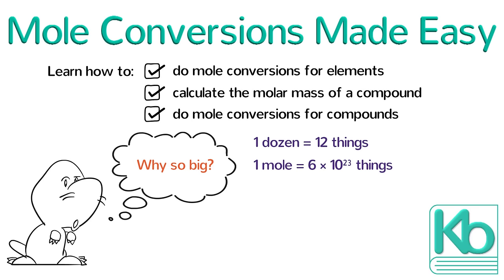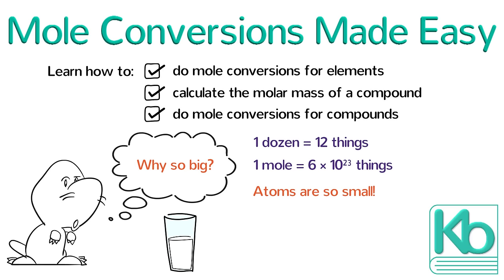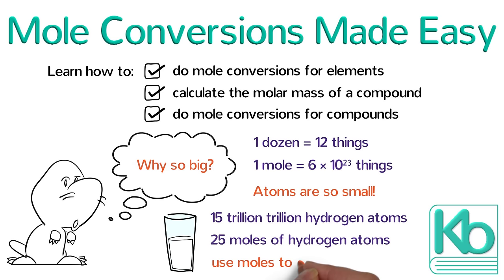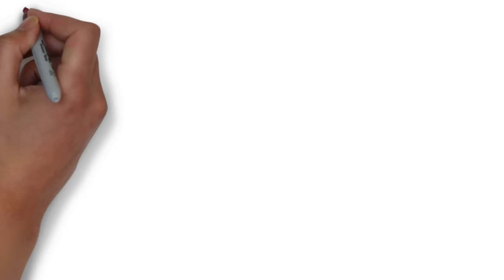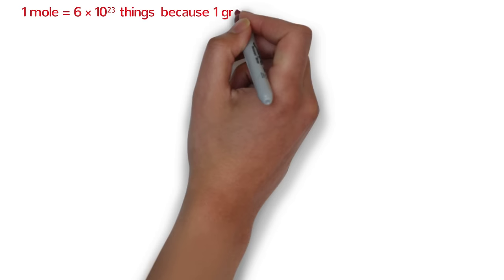But why is the mole such a big number? Because atoms are so small. Suppose you wanted to know how many hydrogen atoms are in one cup of water. If you were able to count all the atoms, you would find that there are about 15 trillion trillion hydrogen atoms in a cup of water. But if we count using moles instead, that works out to be only 25 moles of hydrogen atoms. So we use moles to count atoms, molecules, and other chemicals. It turns out there is an even better reason why one mole equals 6 times 10 to the 23rd things: one gram equals 6 times 10 to the 23rd atomic mass units.